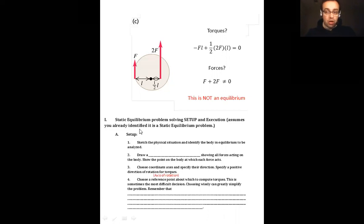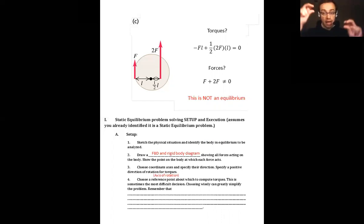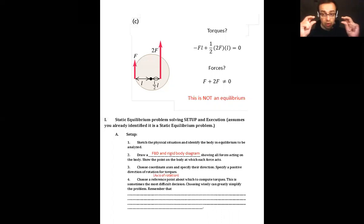How do we use that to actually solve some problems? For setup and execution: first, sketch the physical situation and identify which body in equilibrium you want to analyze. Then draw a free body diagram and a rigid body diagram showing all forces acting on the body. The rigid body diagram helps you identify where forces act along a rod and how they contribute to torques.